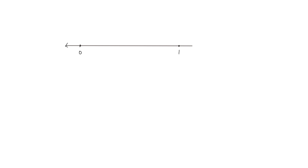Let's look at another one. Let's draw a number line again, mark our zero and our one point, and make sure we put our arrows so we remember that it's a line. This time we're going to divide into fifths: one fifth, two fifths, three fifths, four fifths. We're going to mark the point of two fifths. We want to take these two fifths and make six equal parts. We have two fifths here, so if we want to make eight equal parts, we divide each of these fifths into three pieces.